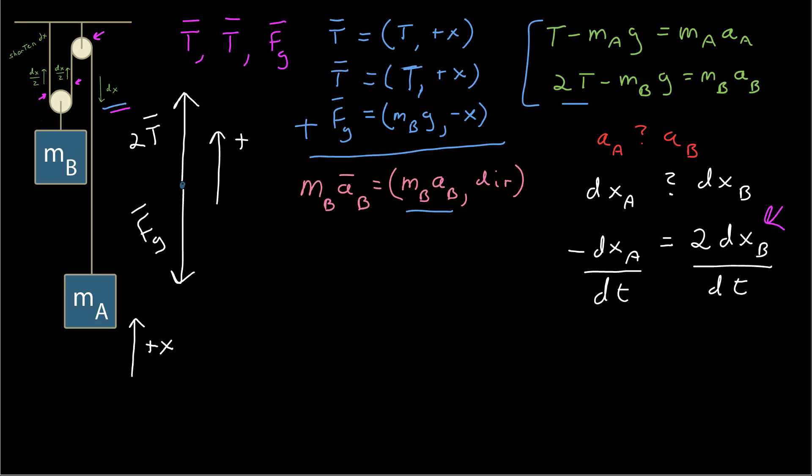Assuming my functions are well behaved, these ratios equal the derivatives. I gave both systems a coordinate system where positive is up. If mass A falls an amount dx sub A, it changes by a negative amount. Mass B moves up half that amount, so dx sub A equals twice dx sub B. Differentiating this relationship, the negative acceleration of A equals twice the acceleration of B, or the acceleration of A equals negative 2 times the acceleration of B. There's no equation that gives us this — we have to extract it logically from the context of the problem and how we established our coordinate systems.